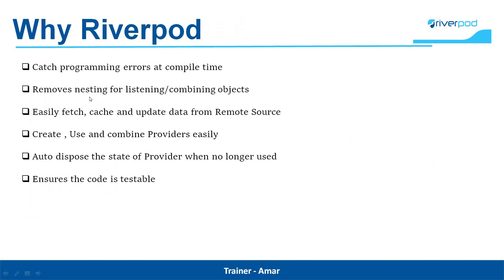Why Riverpod? These are the reasons why we will use Riverpod. The first one is: catch programming errors at compile time, meaning errors are detected during compile time instead of runtime. Second is: removes nesting for listening and combining objects. Third: easily fetch, catch, and update data from a remote source.